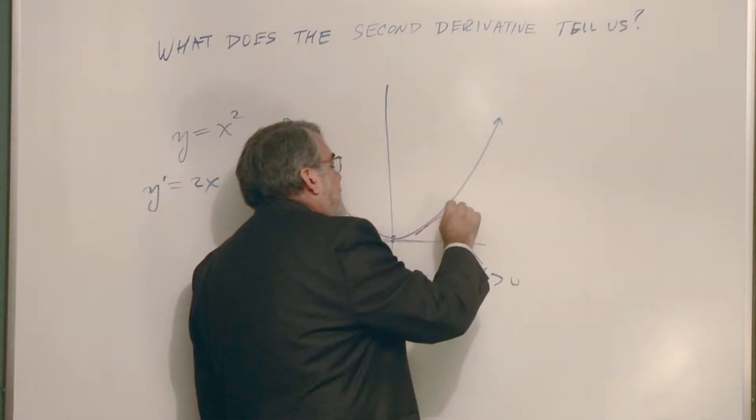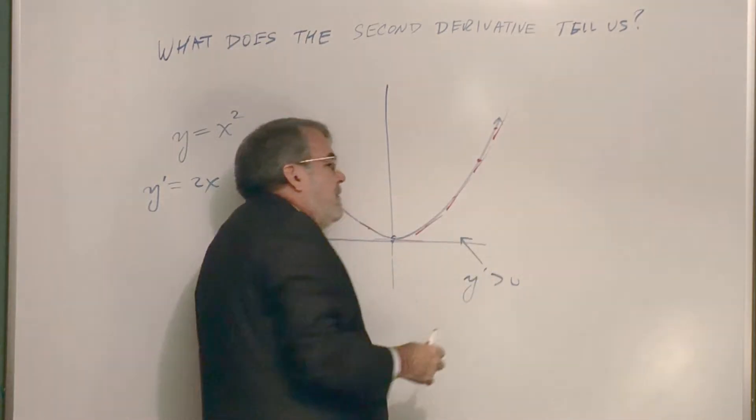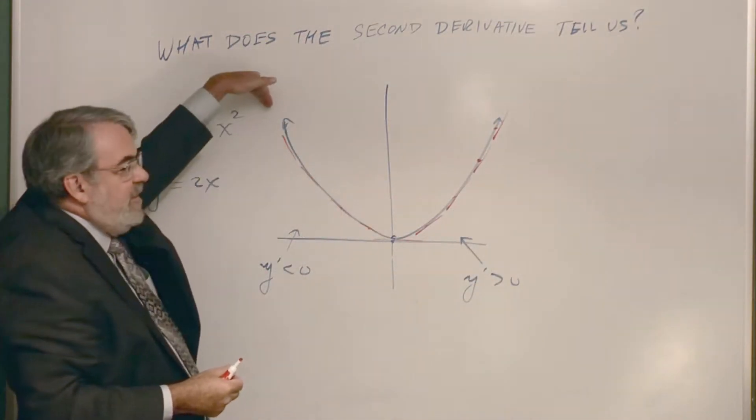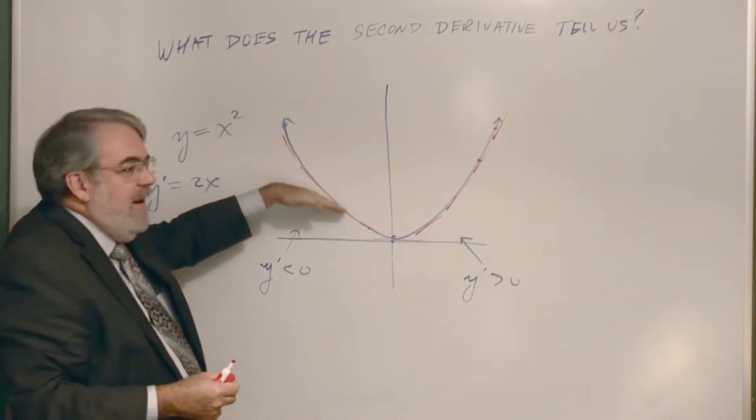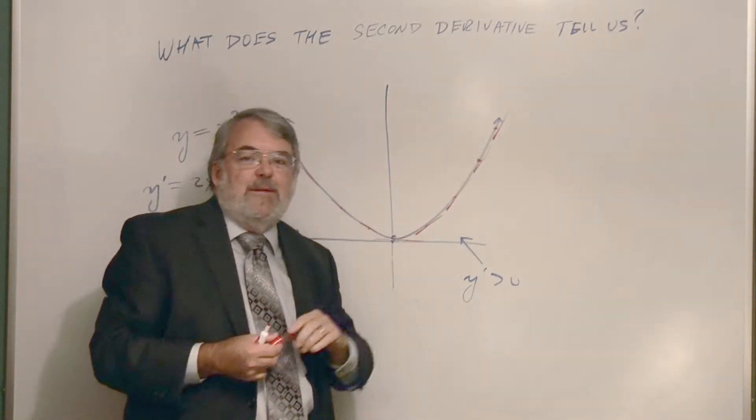And now it's increasing. The slopes are increasing. It's getting steeper and steeper. So it starts steeper here, and flattens out briefly, and then starts to increase and gets steeper and steeper.